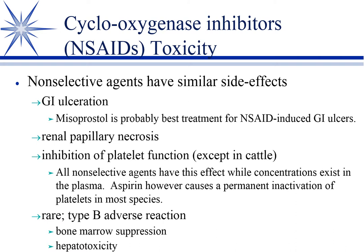These last two adverse effects are type B, meaning idiosyncratic — we don't know why they occur, typically at a fairly low rate. Bone marrow suppression you probably don't see very often, but one you hear a lot about with NSAIDs is hepatotoxicity, especially with Rimadyl. We can't predict which dogs will develop it — probably some sort of genetic difference in the way they metabolize the drug — but you can see hepatotoxicity as a type B adverse reaction.